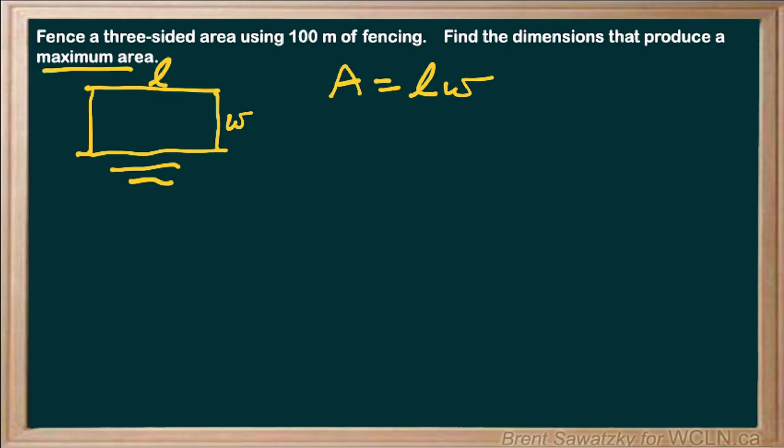Okay, what else do we know? Well, we know that we have 100 meters of fencing total. So if we add up all of our sides, which in this case is just three, we have two widths and we have one length, and that has to be 100 meters.